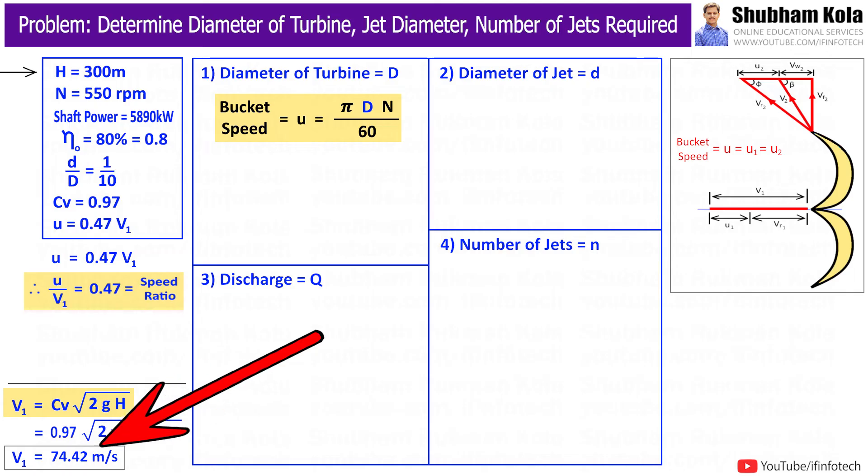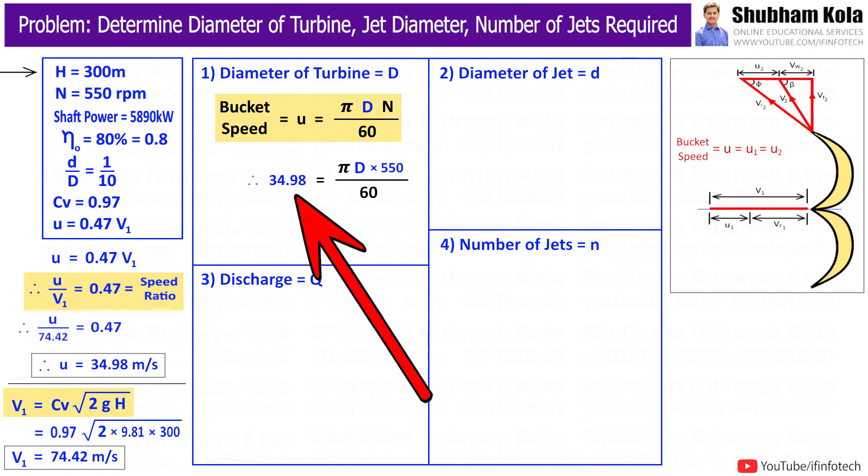This gives me the value of velocity of jet of turbine. Now with the help of these calculated values of velocity of jet V1, we will get bucket speed u, and we have speed N equal to 550 RPM.